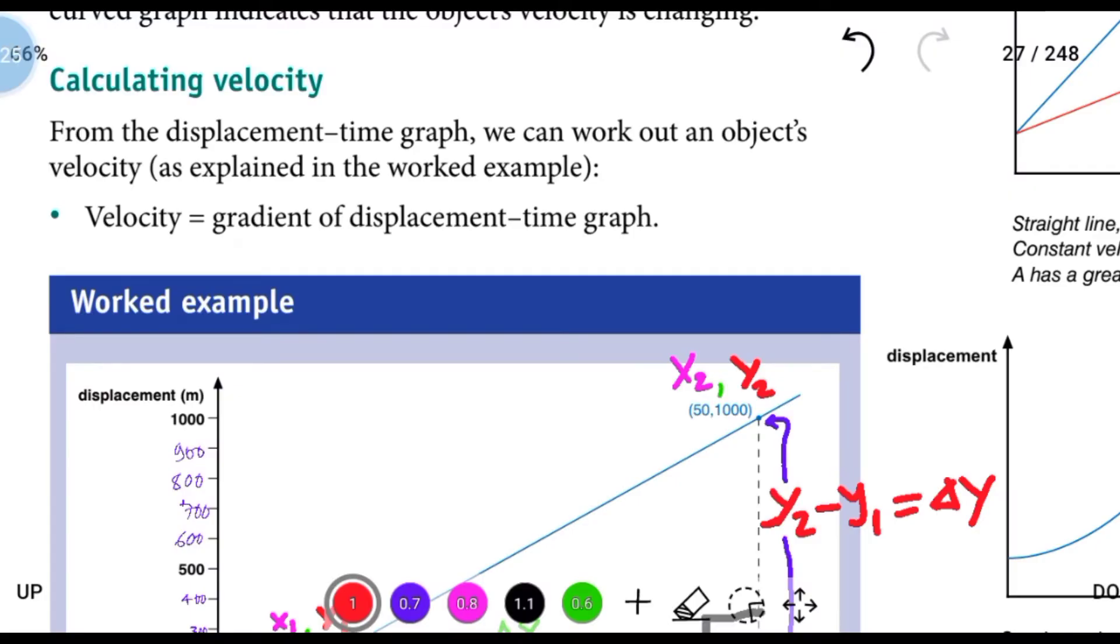In section 2.3, graphical description of uniformly accelerated motion, we'll learn about calculating velocity. From the displacement-time graph, we can work out an object's velocity. Velocity is equal to the gradient of the displacement-time graph.